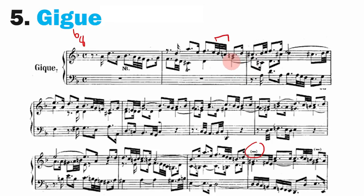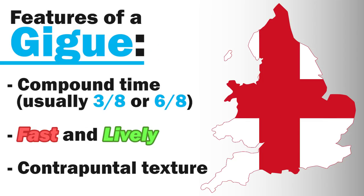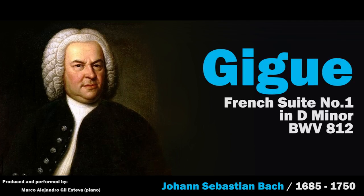There's actually a third melody in the middle voice — you can tell because the stems go down in the middle while the top melody has stems going up. So this is actually a three-voice counterpoint dance. Some features of a gigue: they're generally in compound time, which unusually this one is not; they're fast and lively; and they have a contrapuntal texture, which we've just talked about with the three different voices. So let's take a listen.